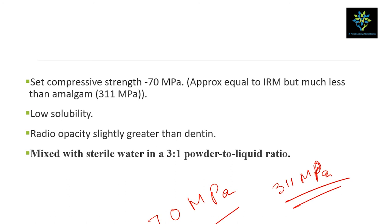MTA has low solubility. Its radiopacity is slightly greater than dentin, so you can easily differentiate it on a radiograph. The powder-to-water ratio is 3:1 — three parts powder to one part water. Be careful not to confuse the powder and liquid parts.